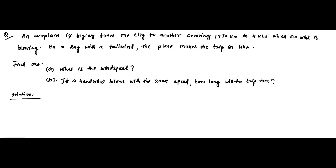Here is another question related to relative velocity. An airplane is flying from one city to another covering a total distance of 1770 kilometers in 4.4 hours when no wind is blowing. On a day when there is a tailwind, the plane makes the trip in 4 hours. We have to find the wind speed, and if a headwind blows with the same speed as the tailwind, how long will the trip take?